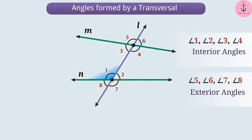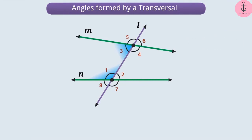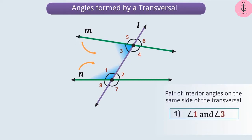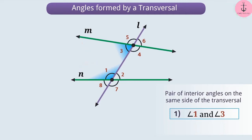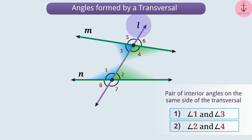Let us consider angle 1 and angle 3. They are interior to lines M and N and on the same side of the transversal. So angle 1 and angle 3 form a pair of interior angles on the same side of the transversal. There is another such pair: angle 2 and angle 4 is also a pair of interior angles on the same side of the transversal.